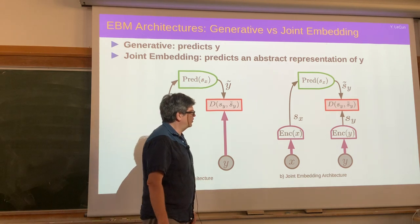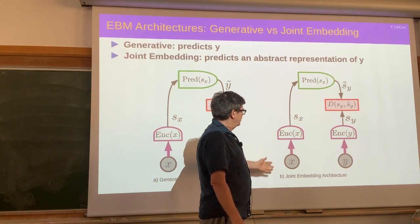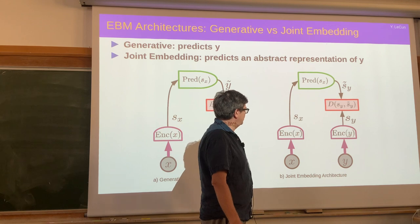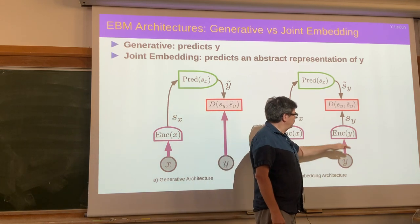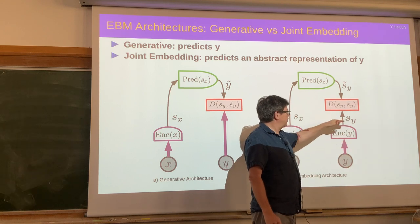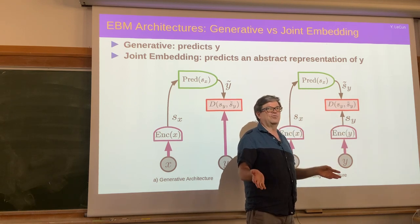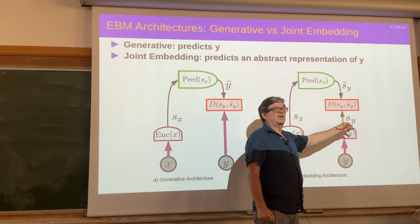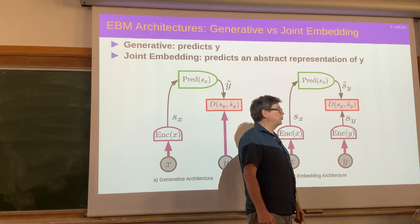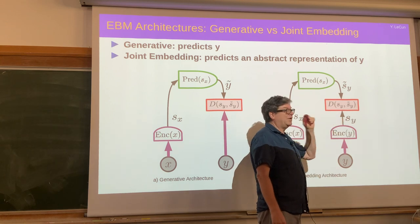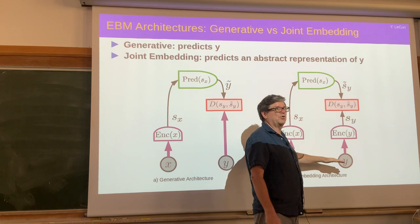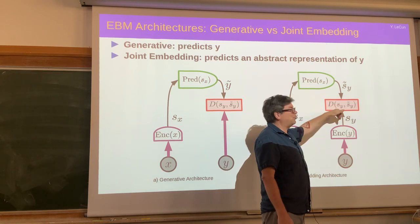What I'm arguing for instead is the joint embedding architecture, and a particular type called the joint embedding predictive architecture, where y also goes through an encoder. The role of this encoder is to eliminate all the stuff that is too complicated to predict or model, and only extract information that is predictable. The stuff that's too hard to predict gets eliminated by this encoder.